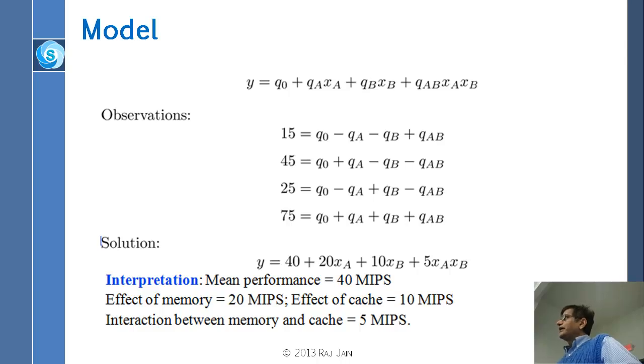How do you interpret this model? This model says that the mean performance is 40, but if you choose xa depending upon the xa the performance could go up by 20 or down by 20. If xa is plus 1, it is plus 20, if xa is minus 1, it is minus 20. So the effect of memory is 20. Cache size has another effect, if it is plus 1 it is plus 10, if it is minus 1 it is minus 10. So the effect of cache is 10 MIPS. And xa xb depending upon what the memory size and cache size is, the performance could be plus 5 or minus 5. So the interaction between memory and cache is 5. This is the effect of A, this is the effect of B, this is the interaction A and B.